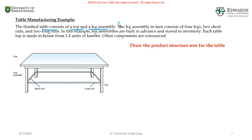Further, the leg assembly consists of four legs, two short rails, and two long rails. The leg assembly has three children: two short rails, two long rails, and four legs.